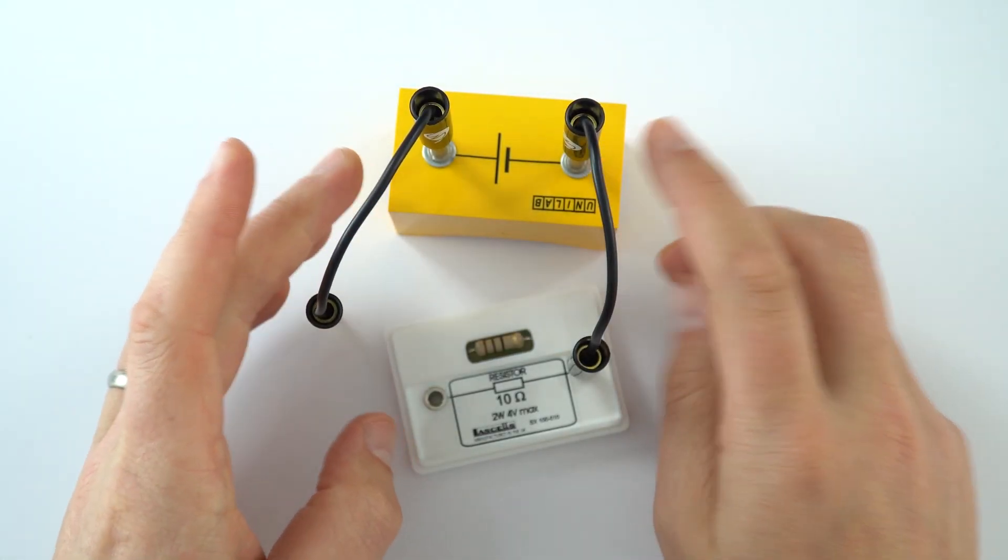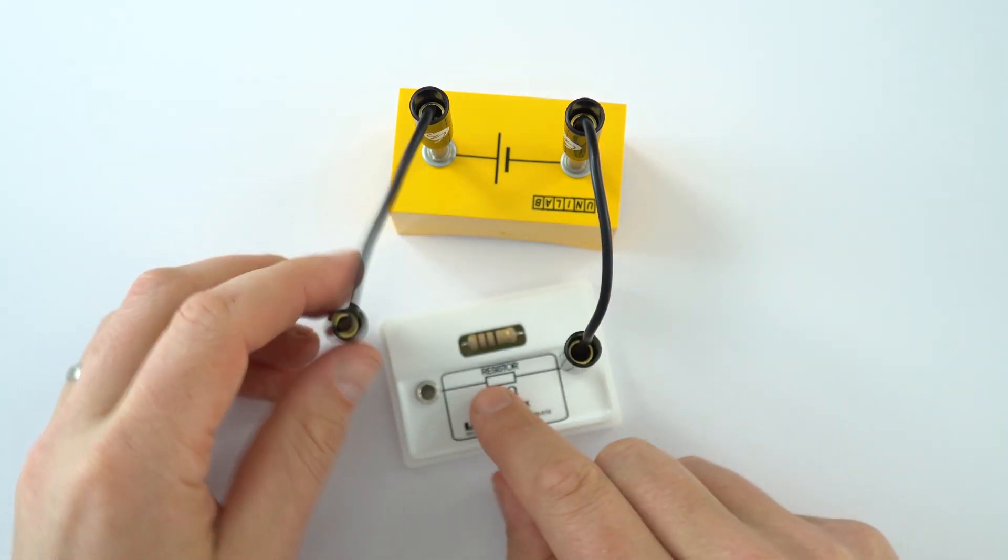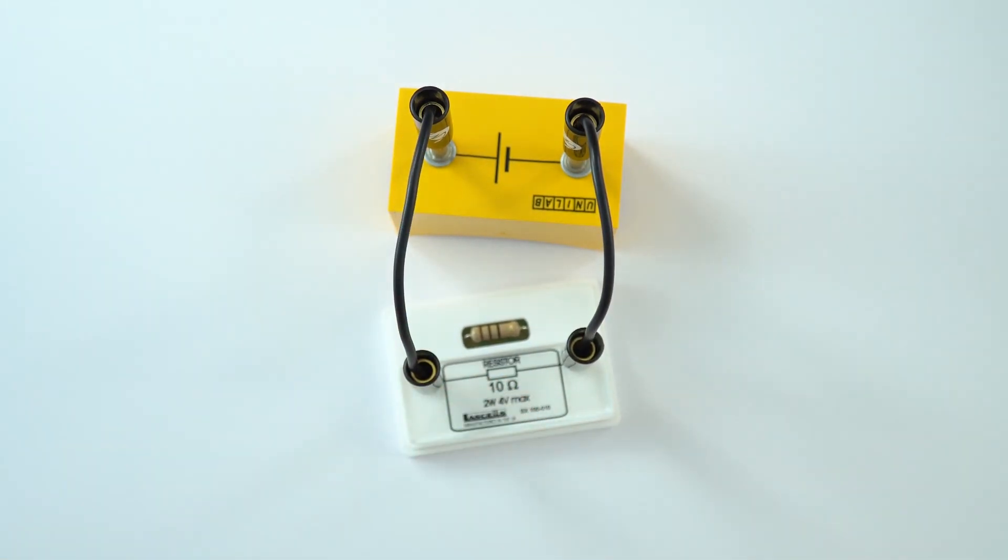Now this is a really basic circuit. We've got a cell and a resistor. When I connect it up, there is a current in that circuit, but we can't tell.